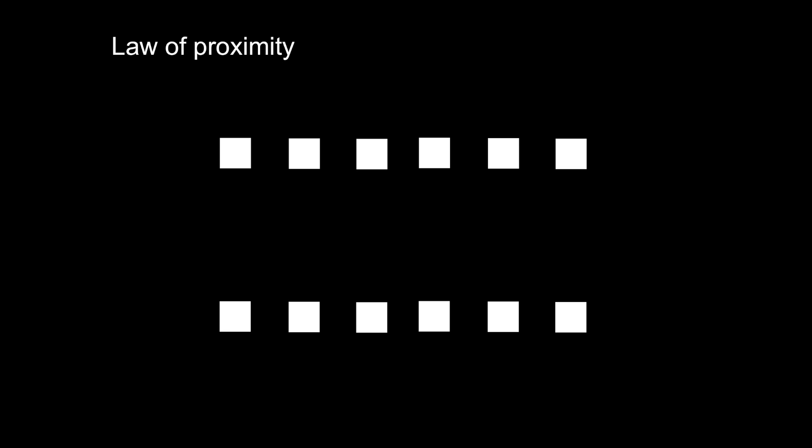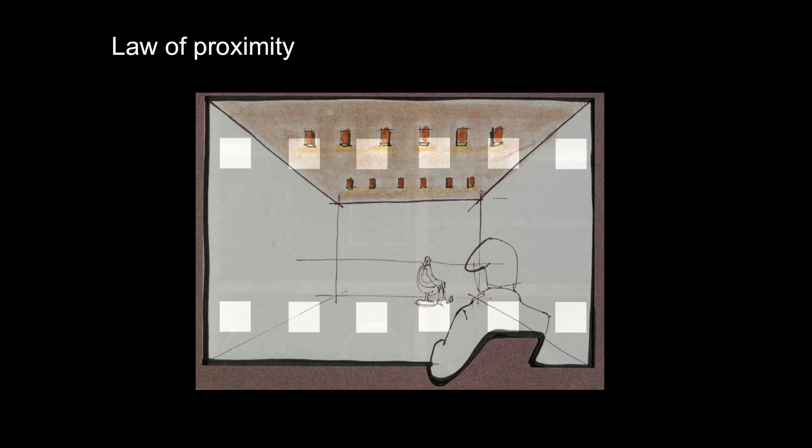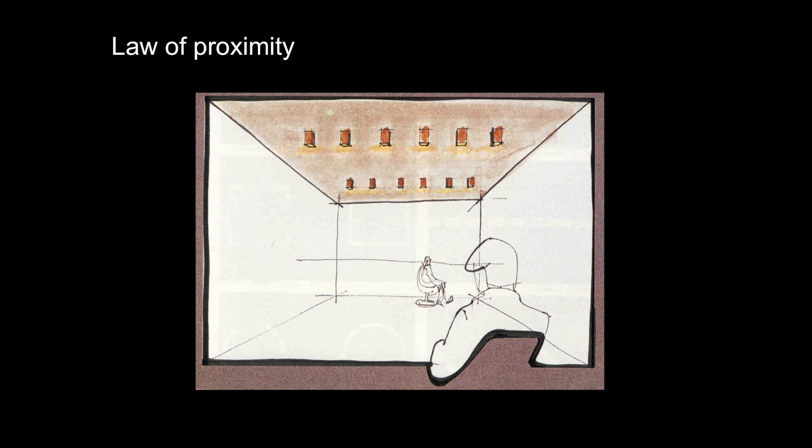The Gestalt law of proximity occurs when elements are placed close together. They tend to be perceived as a group. So here we see 12 squares rearranged as two lines of six. Is this a more appropriate arrangement for the way in which the room has been designed?